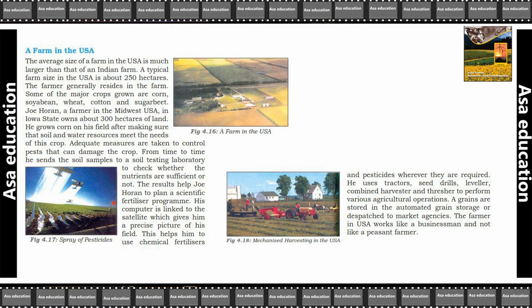He uses tractors, seed drills, levelers, combined harvesters, and threshers to perform various agricultural operations. Grains are stored in automated grain storage or dispatched to market agencies. The farmer in the USA works like a businessman, not like a subsistence peasant farmer as in India.